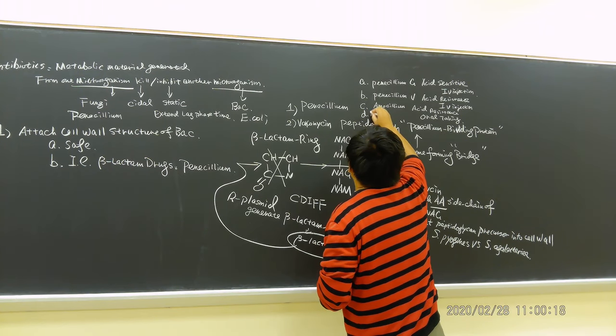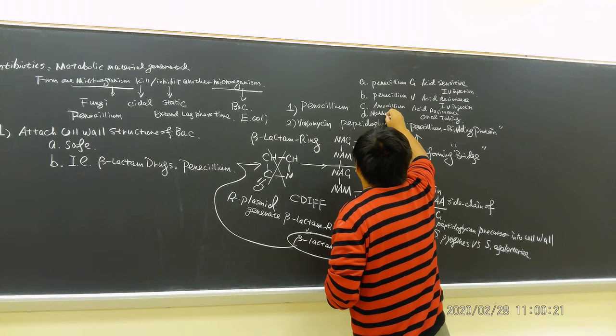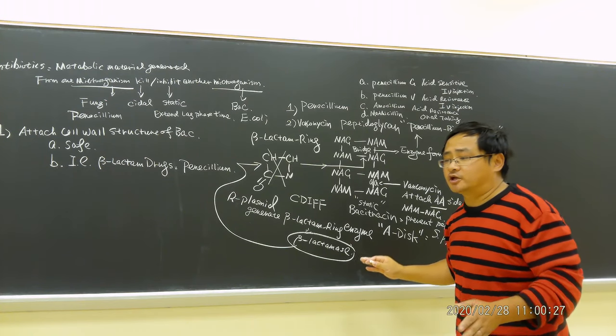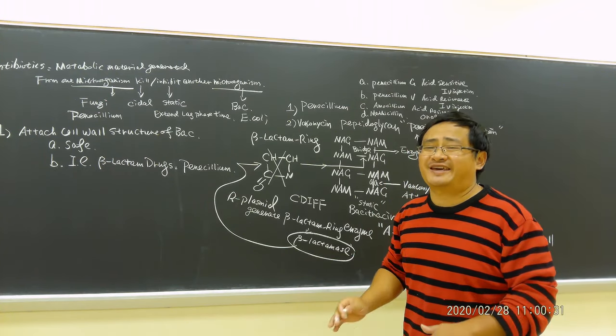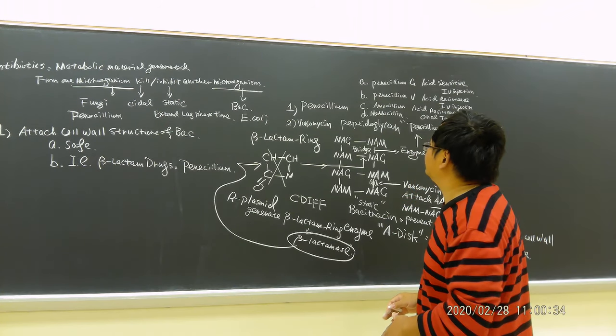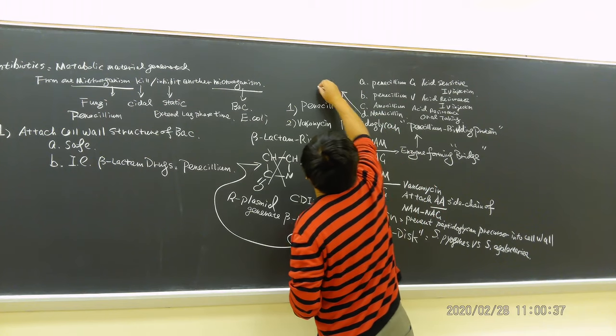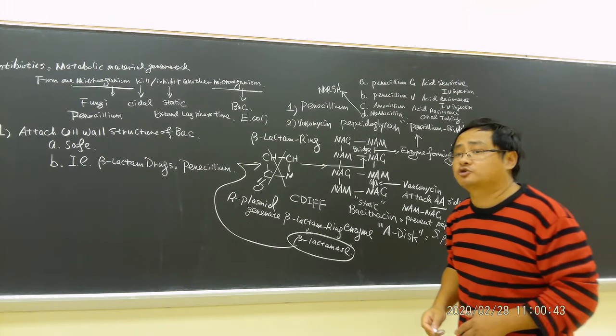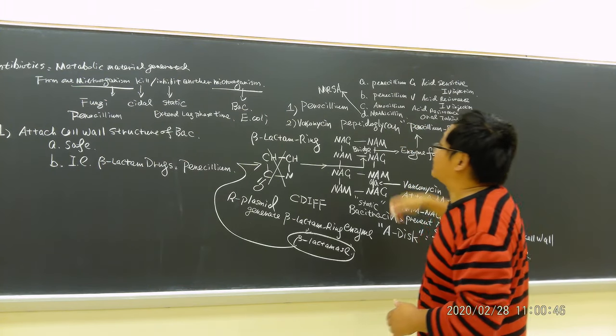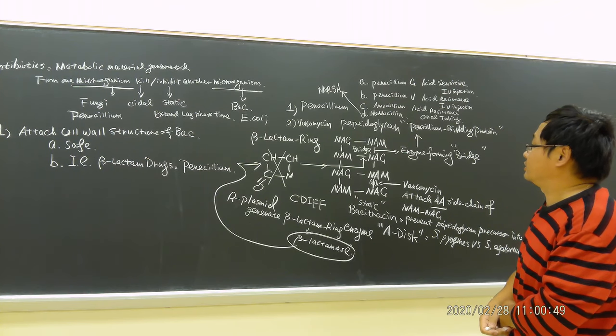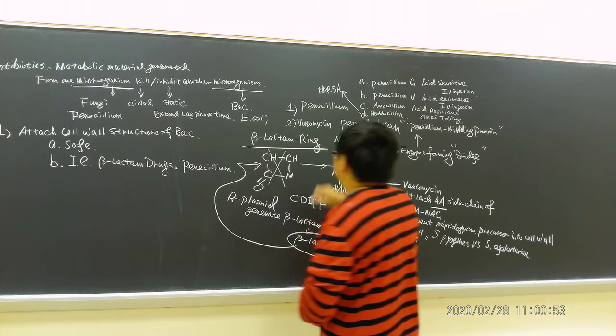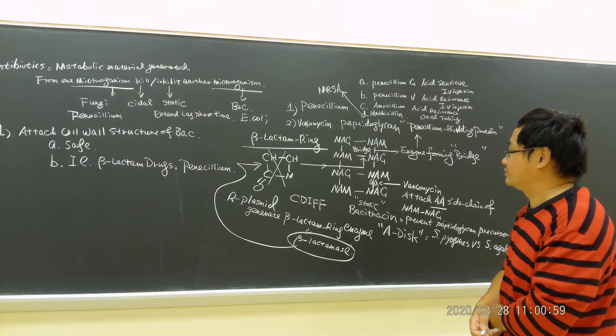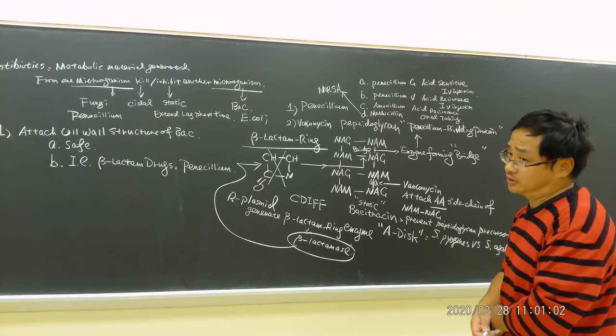Therefore there is a next one developed, a very famous one called methicillin. But unfortunately, methicillin is used too much, including some hospital carelessness. Therefore we have a very famous problem called MRSA, which is methicillin-resistant Staphylococcus aureus. So this is a little bit of the penicillin story. You need to know beta-lactam is very important for attacking bacterial cell wall. Good examples are penicillin, vancomycin, and bacitracin.